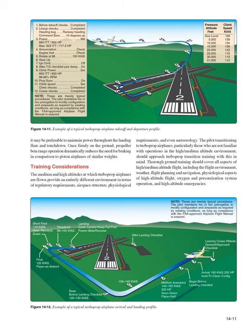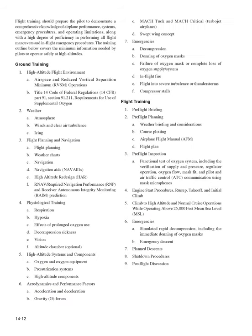Training Considerations. The medium and high altitudes at which turboprop airplanes are flown provide an entirely different environment in terms of regulatory requirements, airspace structure, physiological requirements, and meteorology. The pilot transitioning to turboprop airplanes, particularly those unfamiliar with high/medium-altitude operations, should approach turboprop transition training with this in mind. Thorough ground training should cover all aspects of high/medium-altitude flight, including the flight environment, weather, flight planning and navigation, physiological aspects of high-altitude flight, oxygen and pressurization system operation, and high-altitude emergencies. Flight training should prepare the pilot to demonstrate comprehensive knowledge of airplane performance, systems, emergency procedures, and operating limitations, along with a high degree of proficiency in performing all flight maneuvers and in-flight emergency procedures.